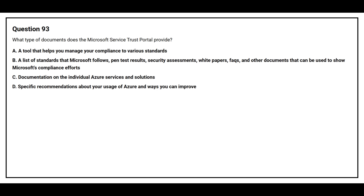Question number 93: What type of document does the Microsoft Service Trust Portal provide? Option A: A tool that helps you manage your compliance to various standards. Option B: A list of standards that Microsoft follows, pen test results, security assessments, white papers, FAQs, and other documents that can be used to show Microsoft's compliance efforts. Option C: Documentation on the individual Azure services and solutions. Option D: Specific recommendations about your usage of Azure and ways you can improve.